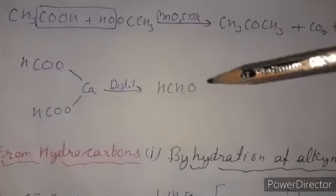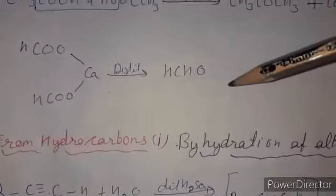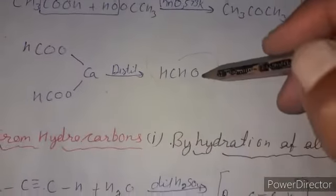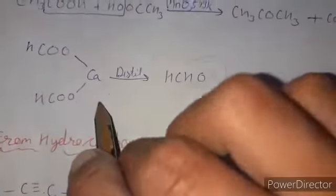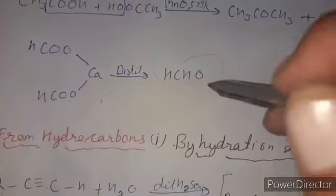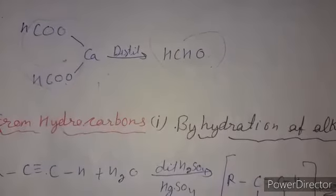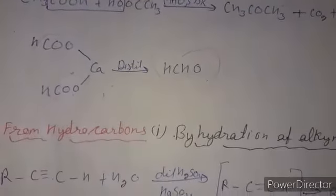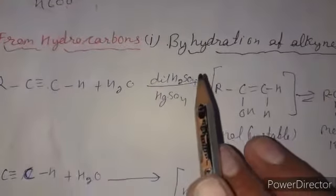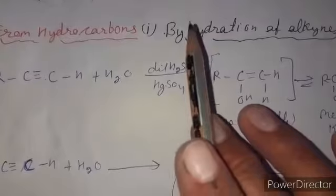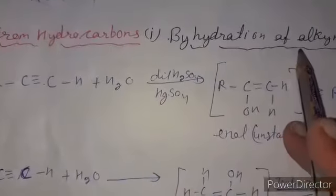Similarly, if we react calcium salts of carboxylic acids upon distillation: calcium formate gives methanal; calcium acetate and calcium formate together give acetaldehyde; and both molecules of calcium acetate give acetone. So we can also prepare aldehydes and ketones from calcium salts of acids.